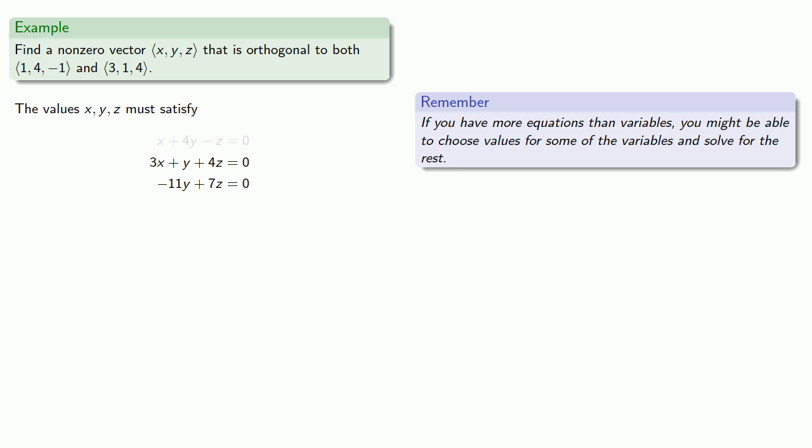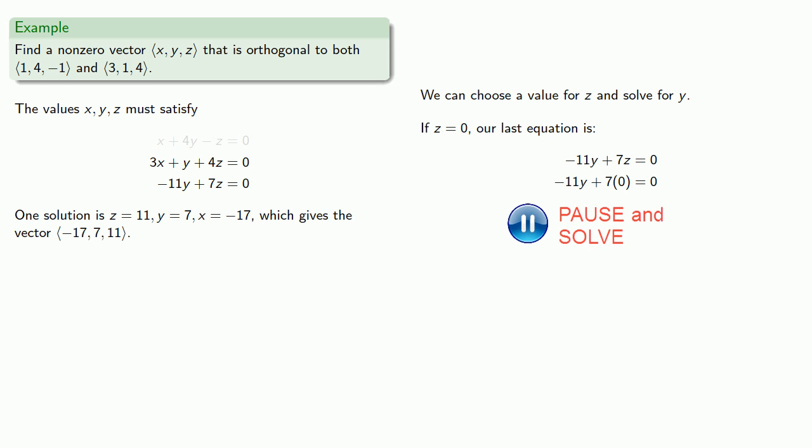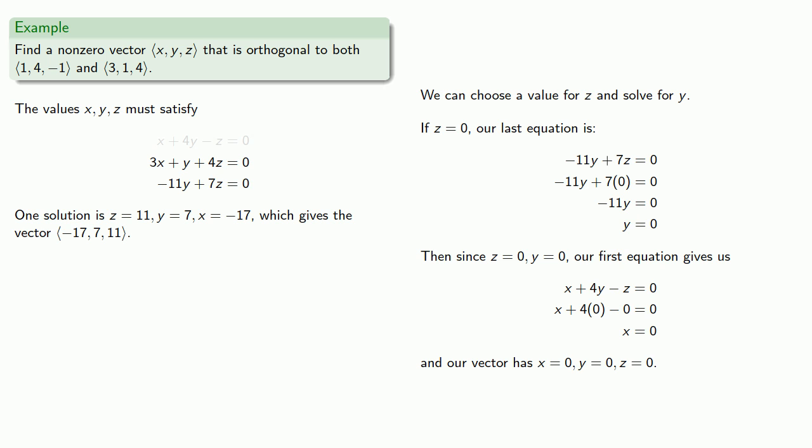So here we have two equations and three unknowns. We might be able to choose a value for some of the variables and find the others. So the strategy that you'll see in linear algebra is it helps to work backwards. So our last variable is z. We can choose a value for z and solve for y. So let's choose z equal zero. If z is equal to zero, our last equation becomes... and we solve. Then since z is zero and y is zero, our first equation becomes... And so our vector (x, y, z) has x equals zero, y equals zero, z equals zero. Except this is a trivial solution, and we don't want that. We want a non-zero vector.